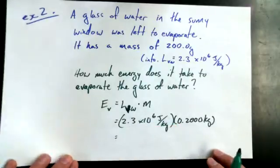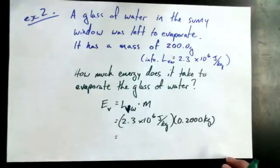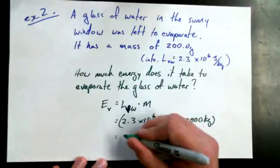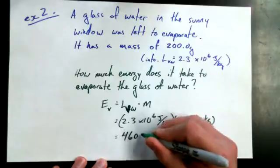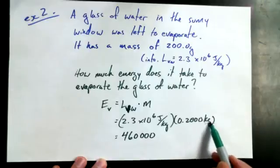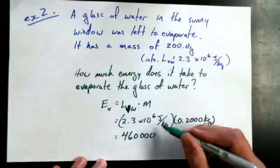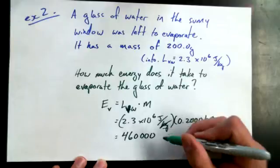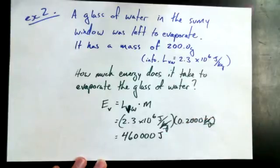So 2.3 times 10 to the power of 6 times 0.2. 460,000. Ooh la la. Okay, 460,000. What are the units? Joules per kilogram. Kilograms here. Kilograms down. Meter squared per second squared. Meter squared per second squared. Joules is good. Okay. Is that what joules is? No, joules is kilogram meter squared per second squared.